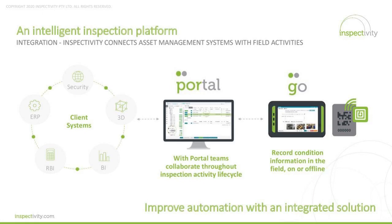An important aspect of our digital solution is the capability to integrate with external systems. We provide an application programming interface (API) to allow a seamless connection between the inspection platform and the systems that are the source of truth for your data. For example, SAP may maintain your functional locations — Inspectivity can source that data from SAP and ensure that change management protocols are maintained between the two systems. Or perhaps you use an Oracle ERP system for work order management — our API can ensure that both work orders and the inspection system remain in sync with status updates. Also, if you have an RBI system such as Meridian and need your inspection profile results to flow back from the field into the RBI system for risk assessment and inspection planning, via API integration we can ensure data integrity is maintained across systems and that all systems are aligned in terms of status and inspection results.